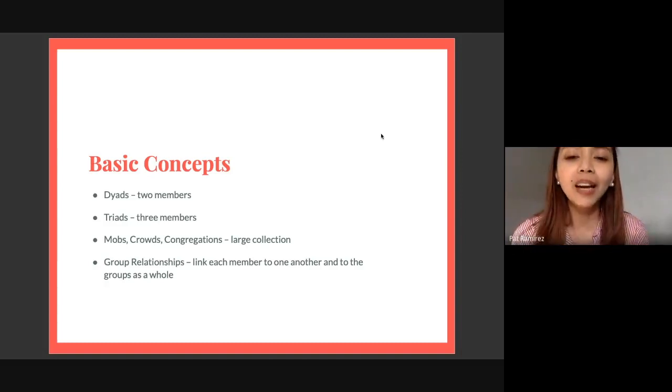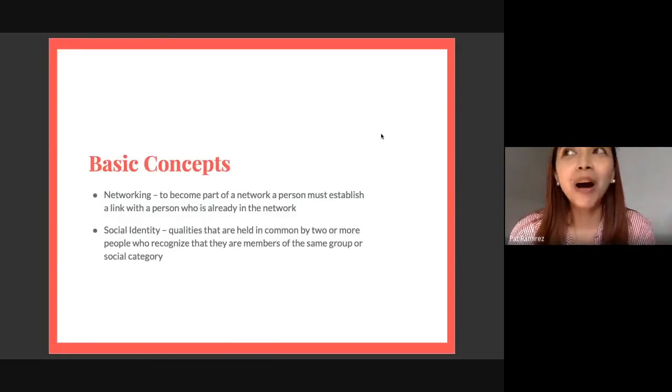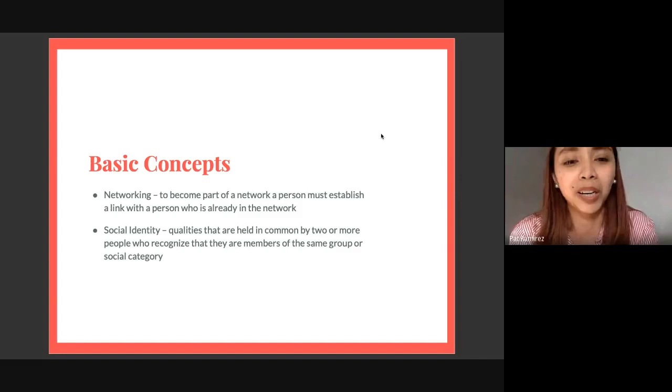We also have the concept of group relations or relationships where we see the link of each member to one another and to the group as a whole. We also have the concept of networking - before we heard about business networking, group dynamics had this concept. The idea is you have one connection to a person regardless of position in the network, then it branches out and you connect to other people. And then we have social identity: these are qualities held in common by two or more people who recognize that they are members of the same group or social category.